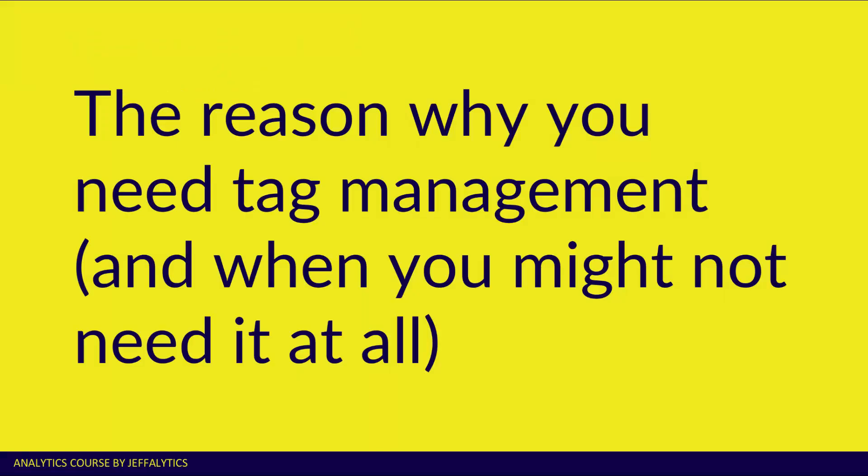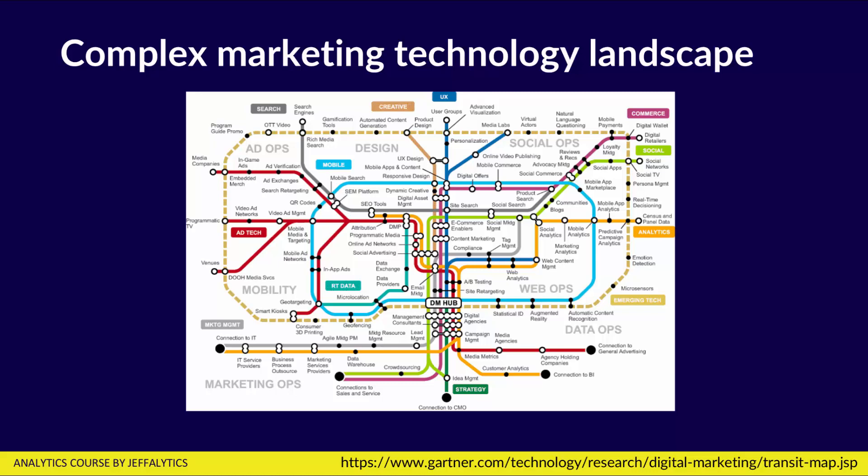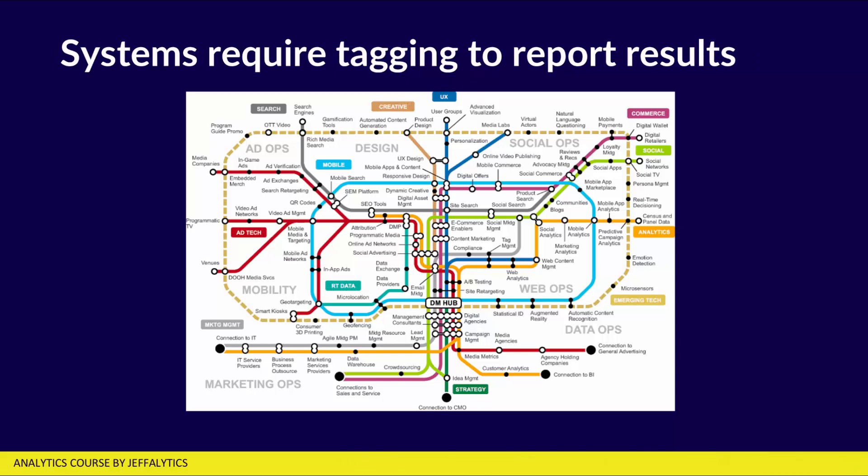So why do you need tag management? The marketing technology landscape is getting more and more complex. This is the Gartner subway map where they talk about all the different things we can do in the world of digital marketing. As you can see, it's comprehensive and pretty much overwhelming. Each one of these systems, if you want to use them, will ask you to do some kind of tagging on your website. You might find yourself using more than a few of these, and too many tags on your website can slow it down and be really unwieldy to manage.